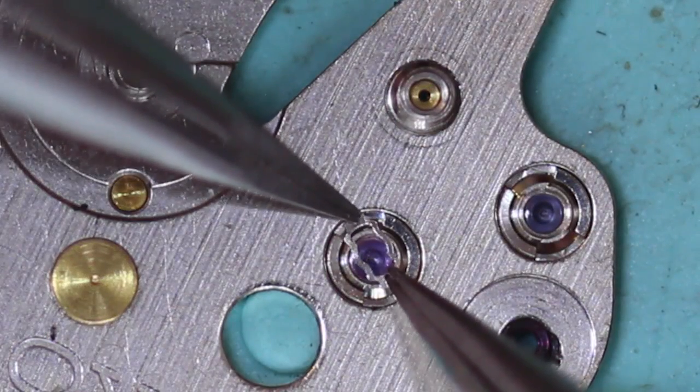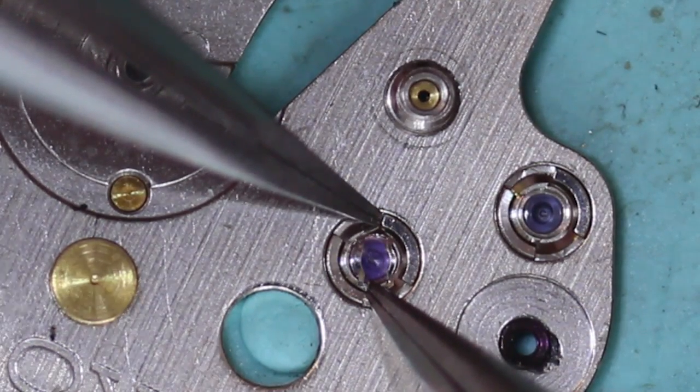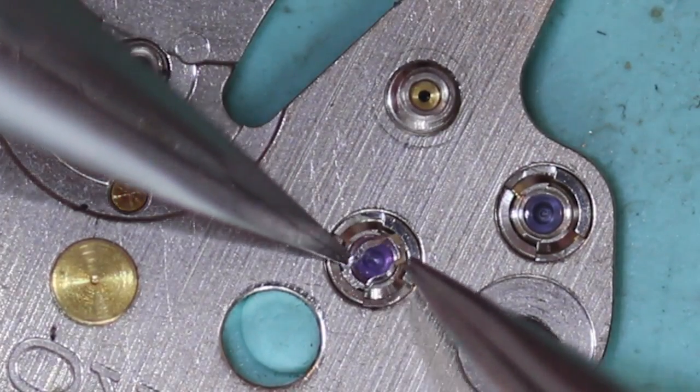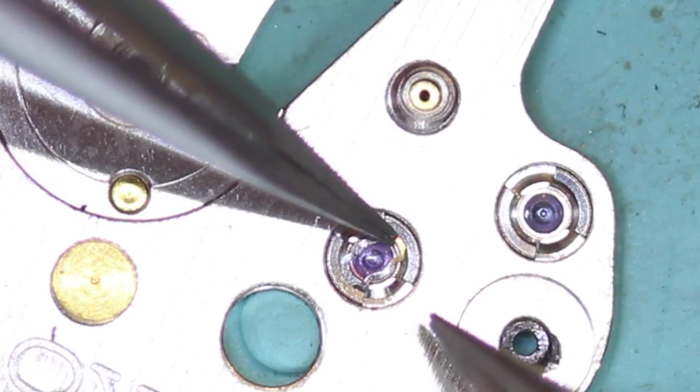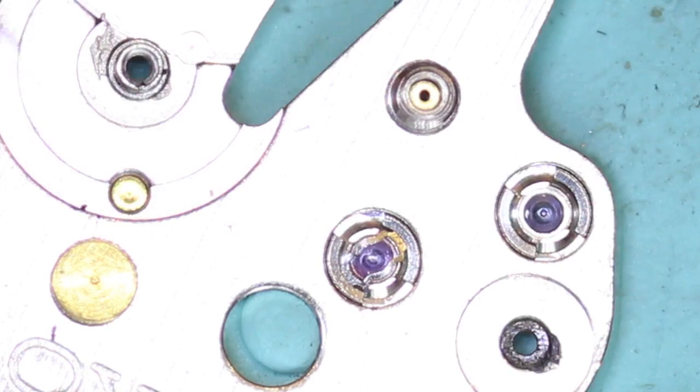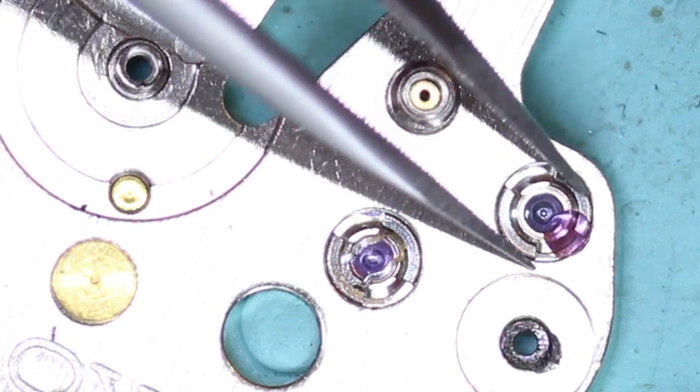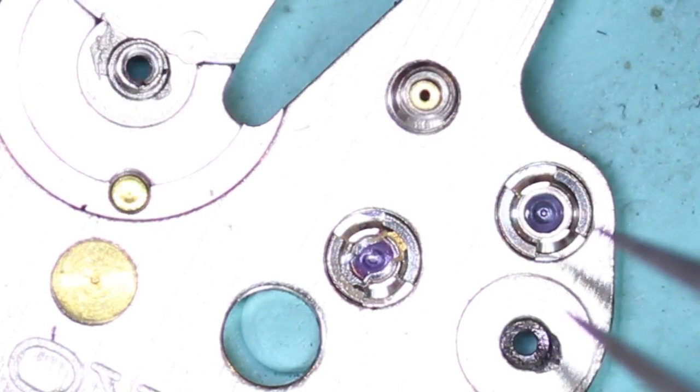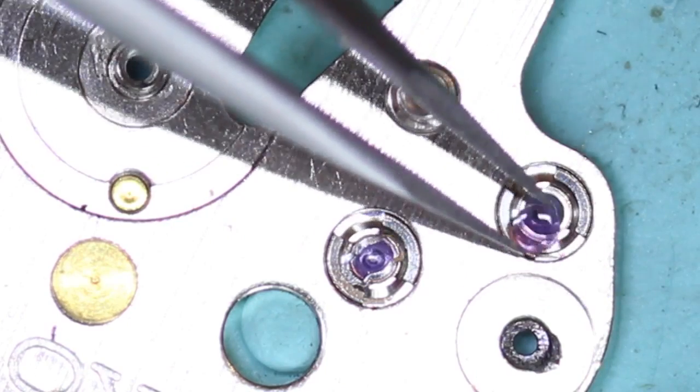See I'm really struggling here. And finally the little sucker gets in there. Okay now with the other endstone, I'm going to place the endstone in dry with no oil. And I'm going to use an automatic oiler once everything's in place. Now this is better because if the endstone moves whilst I'm replacing the shock spring, I'm not displacing the oil. And of course that is much more desirable.